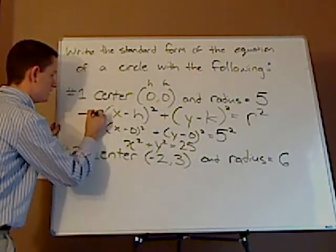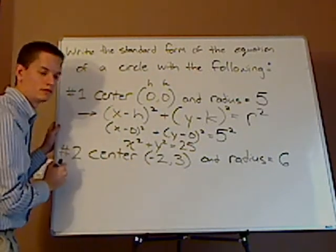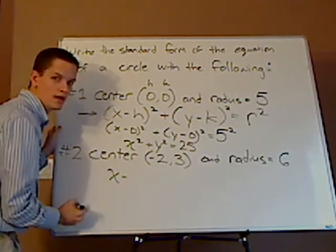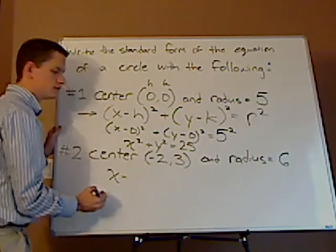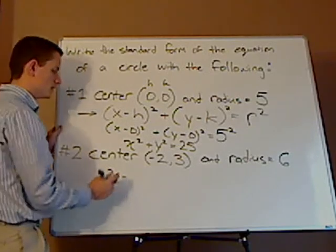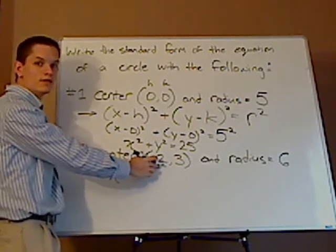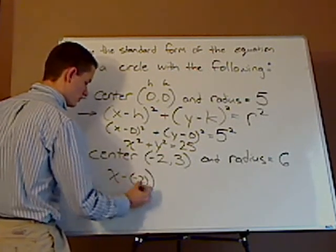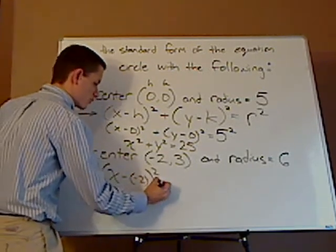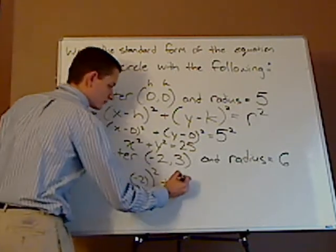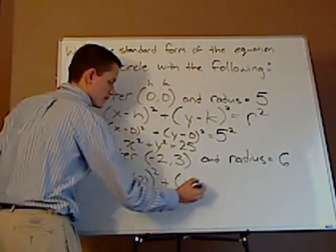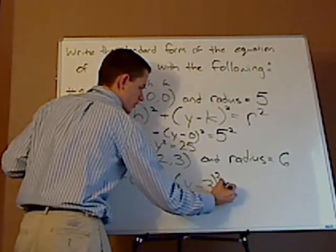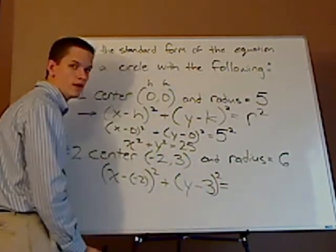So here, you're plugging it again into this equation. So that's going to be x minus... and what you can do so there's not any confusion is put this negative 2 into parentheses. So it's (x - (-2))² + (y - 3)² equals your radius, which is 6².